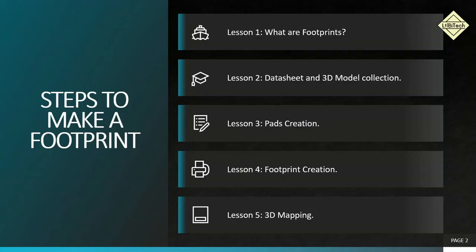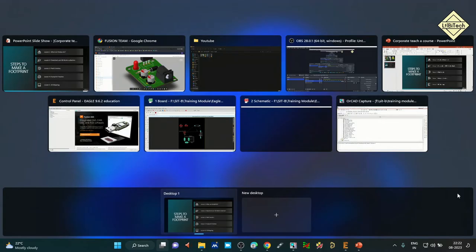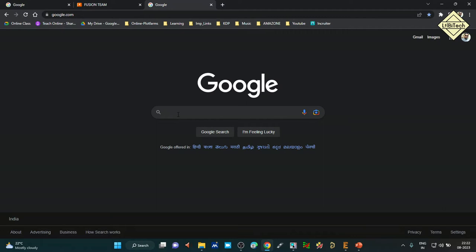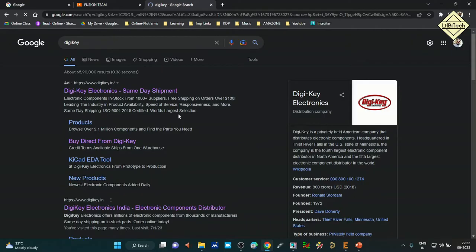Lesson 2 covers datasheet and 3D model collection. We will discuss how to select the datasheet, where to download it from, and how the datasheet contains dimension details for every component whose footprint we are creating. We also look for 3D STEP models from third-party vendor websites. Open a web browser and go to Google, then navigate to DigiKey — a component supplier across the globe.